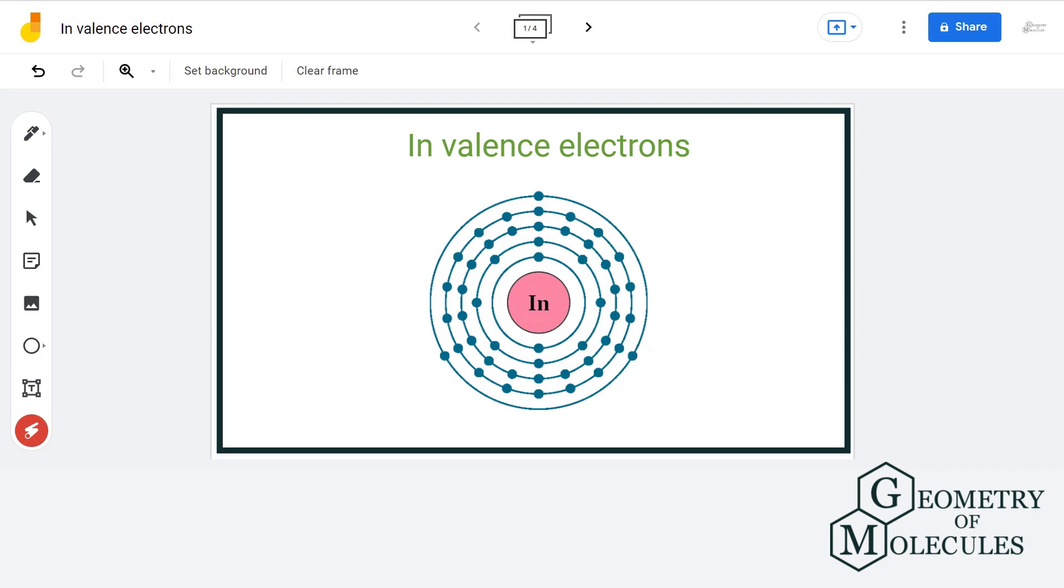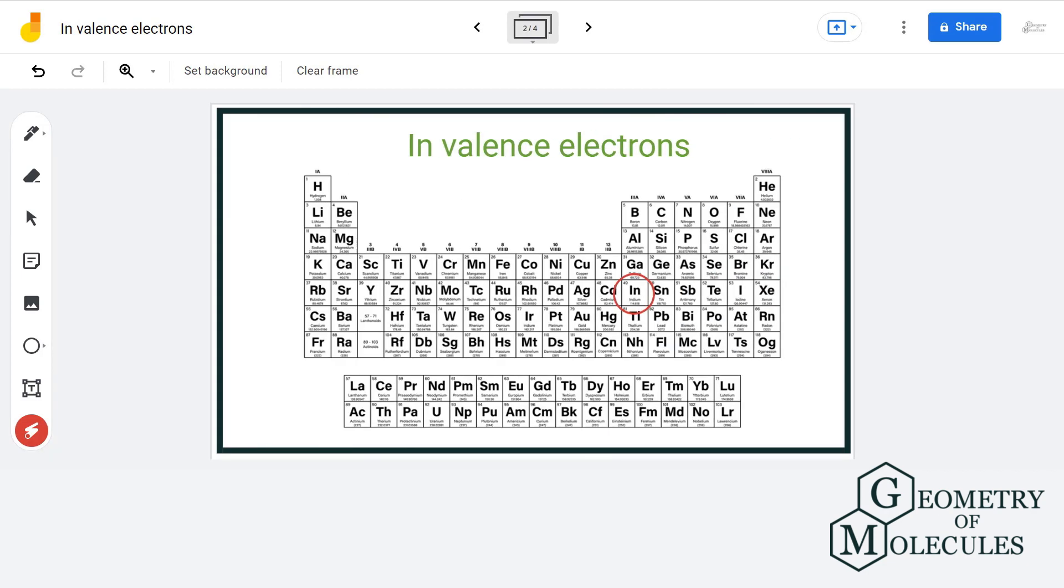The number of valence electrons can be determined by looking at the periodic table. For that, we first locate the atom whose valence electrons are to be found, then we look at the group it is located in. When we go down a group, the number of valence electrons remains the same even after there is an increase in the number of shells.